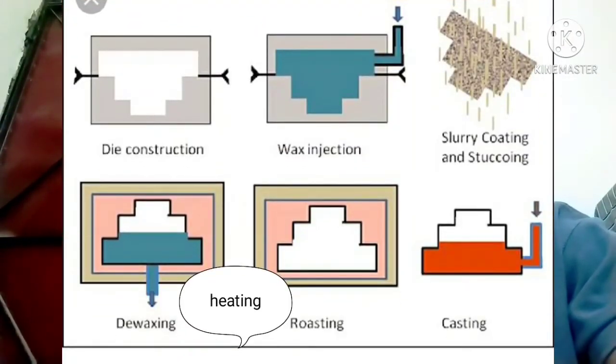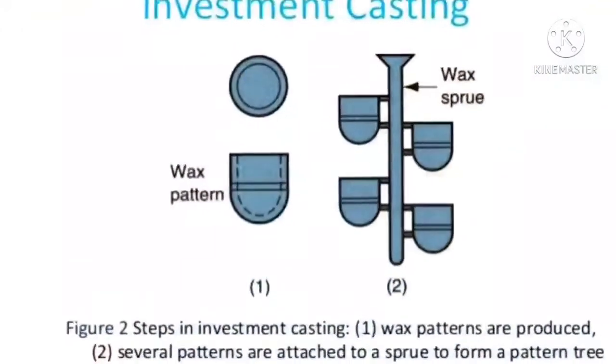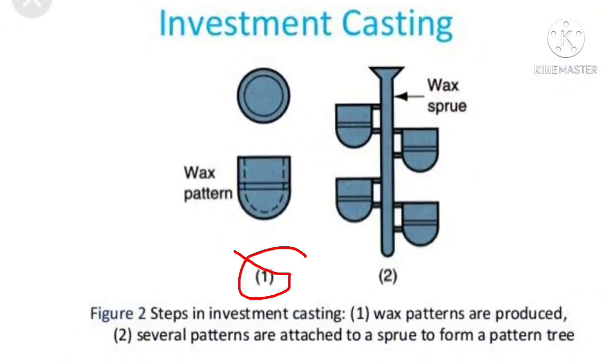Now we will discuss the steps of the investment casting process. The first step is creating the pattern of wax from the injection die. We have to make the wax pattern from the metal injection die, and with the help of the metal injection die we create the wax pattern.